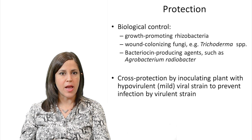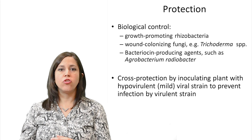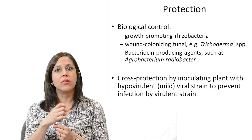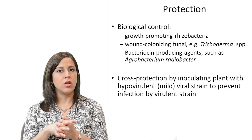Cross protection can also work — inoculating a plant with a hypovirulent or mild virus strain basically prevents infection with a virulent strain of the same pathogen.